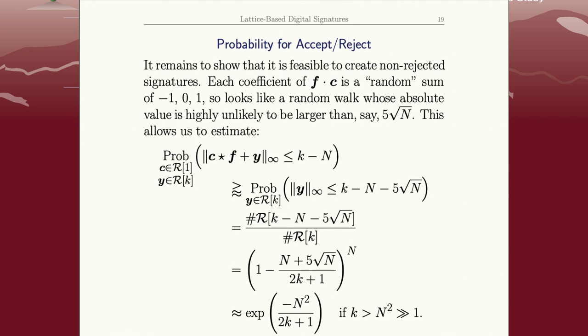So one wants to compute the probability, again, if I choose a random C and a random Y, what's the probability that the signature I get has coefficients actually less than or equal to K minus N?